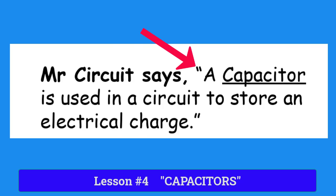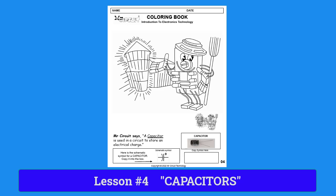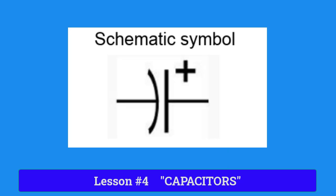At the middle of the bottom of the page, you will see a typical schematic symbol that is used by engineers and technicians to represent a capacitor. The symbol has four lines with a plus sign.